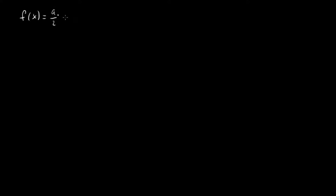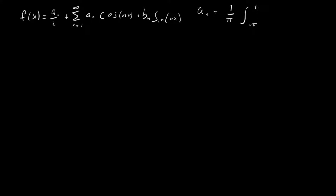Last time we saw that the Fourier series for a function f of x was equal to a₀ over 2 plus a sum from n equals 1 to infinity of aₙ times cosine of nx plus bₙ times sine of nx, where aₙ equals 1 over pi times the integral from minus pi to pi of f of x cosine of nx dx, and likewise bₙ is given by the same integral but with sine nx.